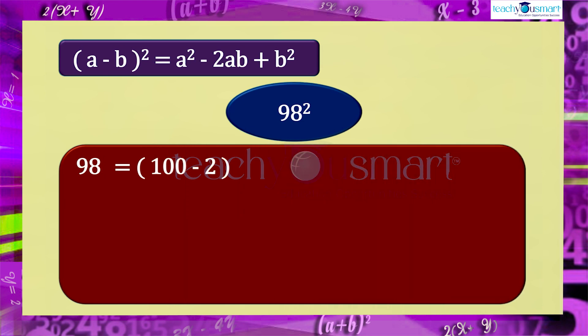We know 98 is equal to 100 minus 2. Therefore, 98 square equals (100 minus 2) the whole square.